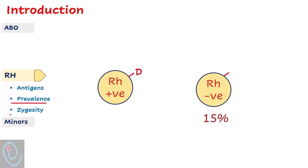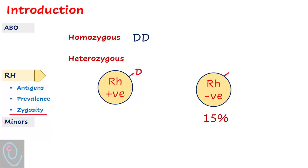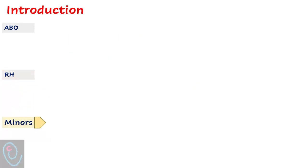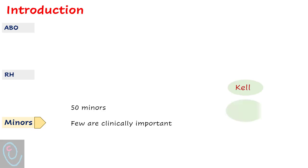The prevalence of the RH negative population is about 15%. An RHD positive person may be homozygous or heterozygous. Homozygosity means the presence of two D genes on chromosome number one, while heterozygosity means the presence of only one RHD gene on chromosome number one. RH negative people have no D genes. In addition, there are more than 50 other minor antigens, some of which are clinically important, such as KEL, DUFFY, and KIDD antigens.